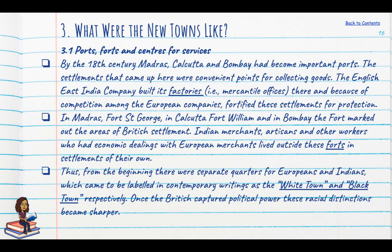In Madras there was Fort St. George, in Calcutta Fort William, and in Bombay the fort marked the area of British settlement — these came to be known as the White Town. All those Indians who had any interaction with the British East India Company began to settle outside the fort, which came to be known as the Black Town.